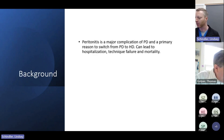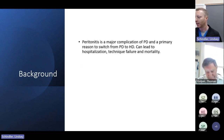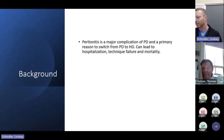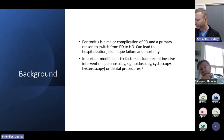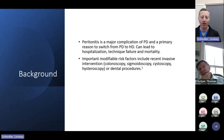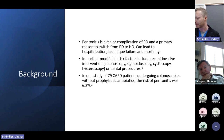As we all know, peritonitis is a major complication of peritoneal dialysis and it's a primary reason why folks have to switch from PD to hemodialysis. This can lead to hospitalization, technique failure, and worst of all mortality. There are some important modifiable risk factors including recent invasive interventions — colonoscopy, sigmoidoscopy, cystoscopy, hysteroscopy, and dental procedures — so knowing that our PD patients may be getting ready for a procedure provides an opportunity for us to prevent a bad outcome.